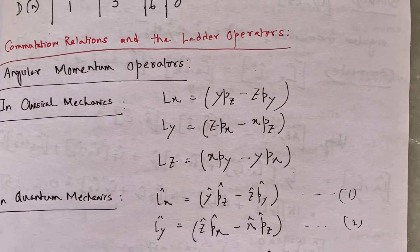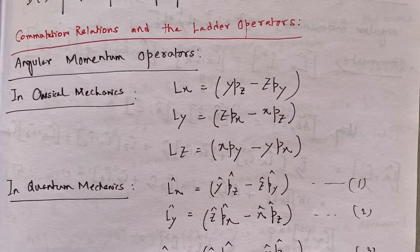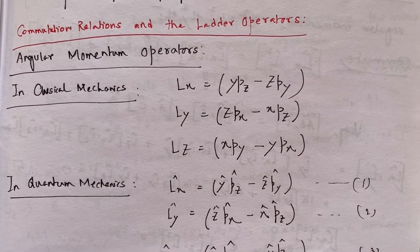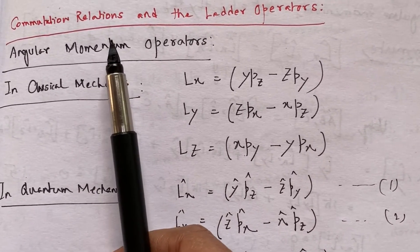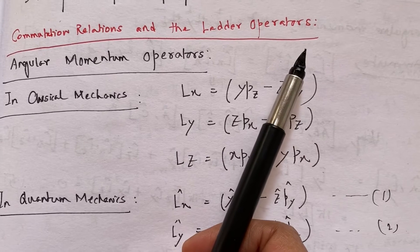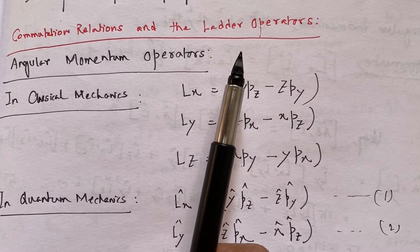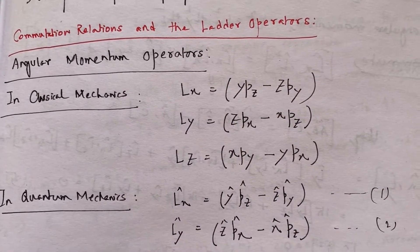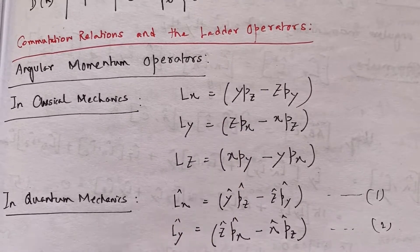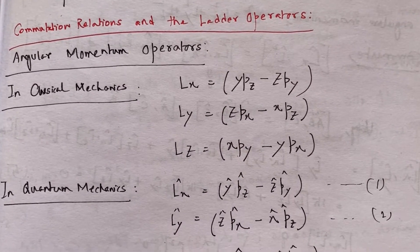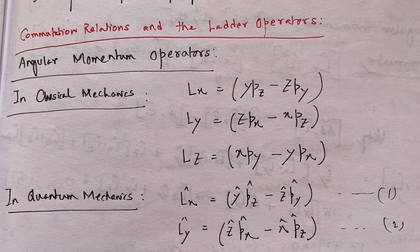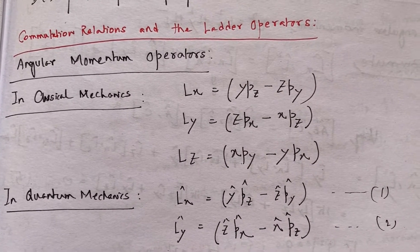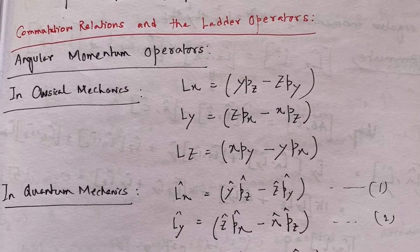Let us discuss operators used in harmonic oscillators and other quantum mechanical problems. We will now be discussing commutation relations and the ladder operators. I will explain why these are called ladder operators. Ladder operators are operators which increase and decrease the energy values.